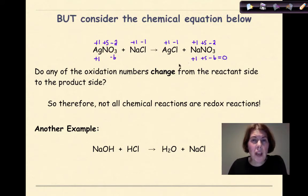When we look at this, we have to ask ourselves the question, do any of the oxidation numbers change from the reactant side to the product side? So silver on the reactant side is plus one. Plus one. Nitrogen plus five. Plus five. Oxygen negative two. Negative two. Sodium plus one. Plus one over on the product side. Chlorine minus one. Minus one over on the product side. We would not classify this as a redox reaction. There is no change in oxidation numbers for any of the elements as they go from reactants to products. Therefore, not all chemical reactions are redox reactions.